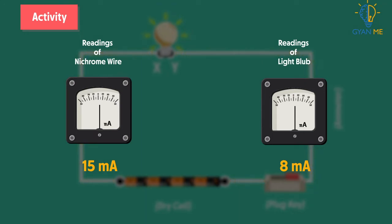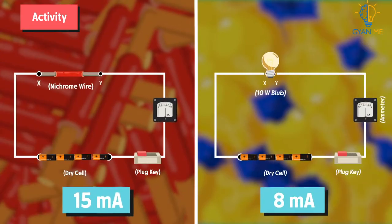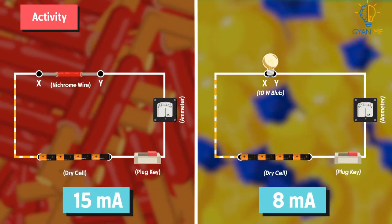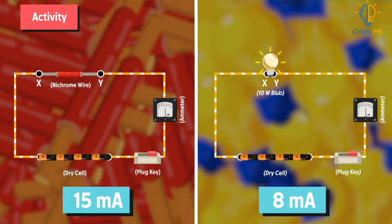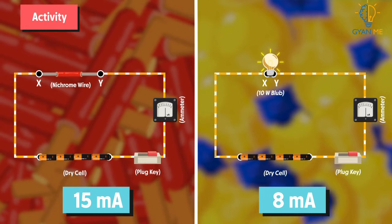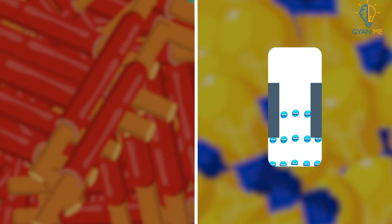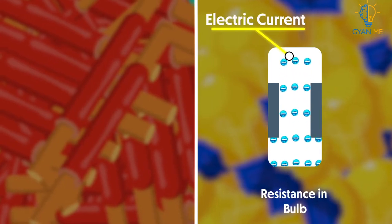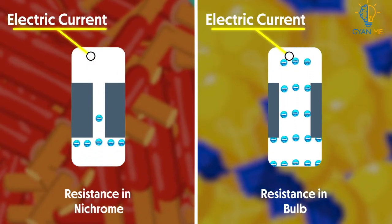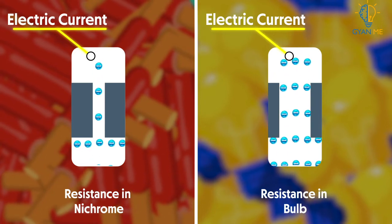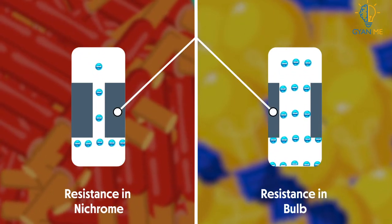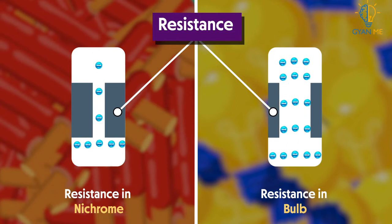What do the above observations indicate? Let us analyze the observations. We observe that the current is different for different components. This is because certain components offer an easy path for the flow of electric current, while others resist the flow. In simple words, the resistance of different materials is different.